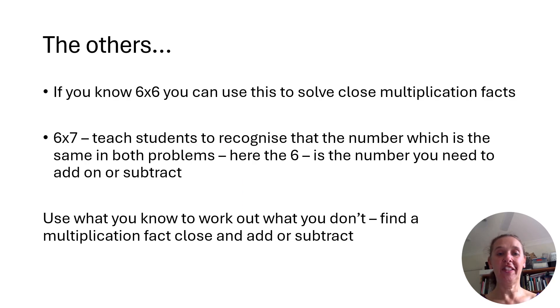So with those, you can then solve pretty much everything else. So if you know six times six, six times six is 36, then they can use that to work out six times seven. So I teach the students that where the number is the same, in this case, there's a six in both questions. So that's the number you've got to add on or subtract. So in this case, add ons, we're going to add on another six. So 36, even if I have to count on six, 37, 38, 39, 40, 41, 42. So use what you can. So find a subtraction fact close to the one you don't know, and then work towards the one you need to find out.